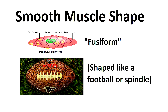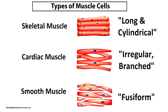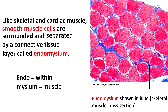As we take a look at the shape of smooth muscle, you'll notice that it has a shape referred to as fusiform, which resembles a football or a spindle shape. This is different from cardiac muscle tissue, which develops into an irregular branched pattern, or skeletal muscle tissue, which consists of fibers that are very long and cylindrical. However, like skeletal and cardiac muscle, smooth muscle is also surrounded and separated by a connective tissue called endomysium.